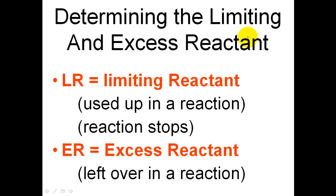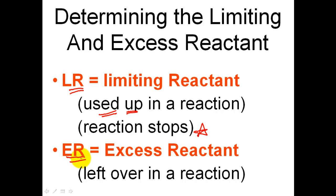The limiting reactant is the reactant — the starting material — that is used up in a reaction. And once it is used up, the reaction stops. Once the reaction stops, I'm going to have some reactant left over. The reactant that was not used up is called the excess reactant — it is the one that is left over. Certain reactions can be designed perfectly where you don't have any excess reactant and both of them are used up. But unless you do a very, very perfect reaction, you're not going to find that.